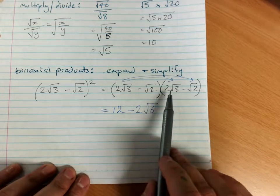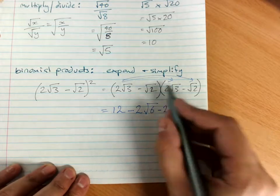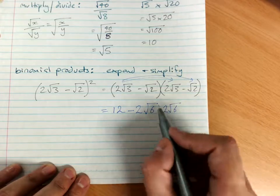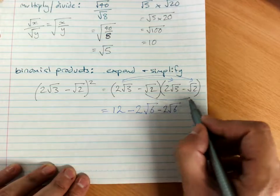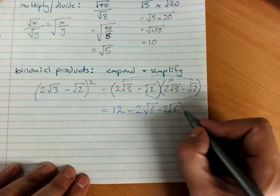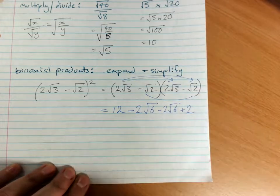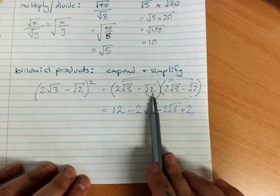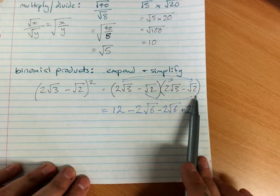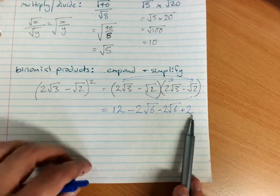Minus root 2 times 2 root 3, minus 2 root 6. Then negative root 2 times negative root 2 plus 2. So use that aspect that when it's root 2 times root 2, you just get the base of 2.